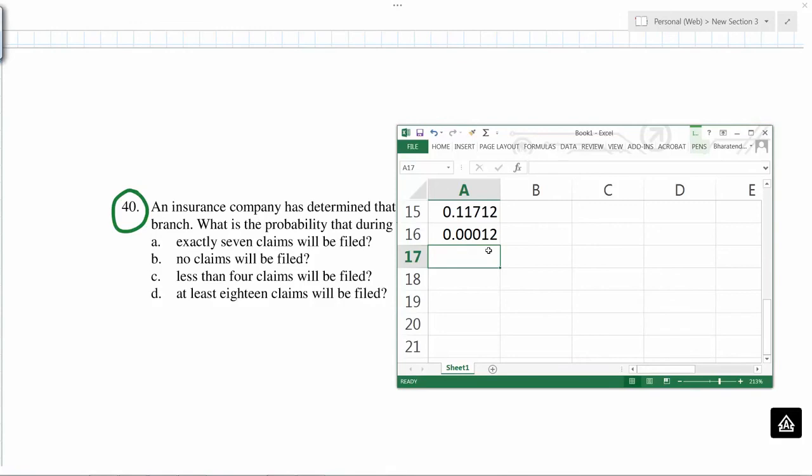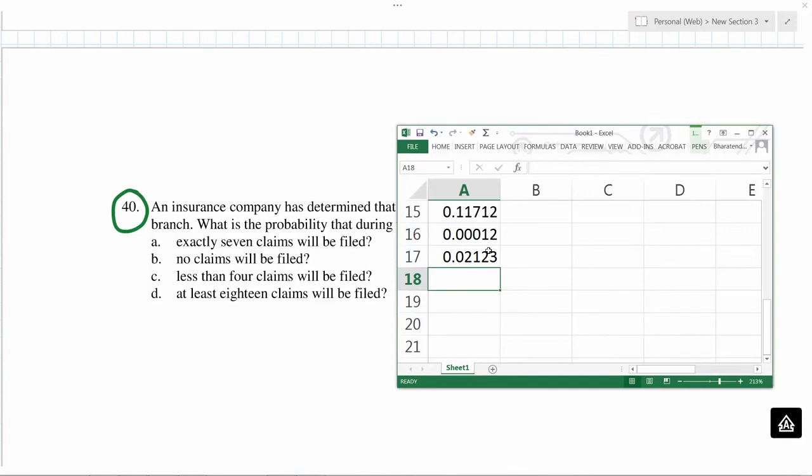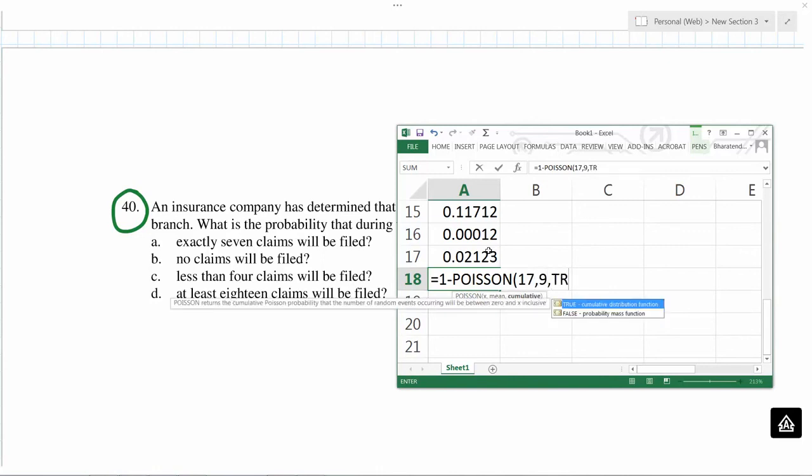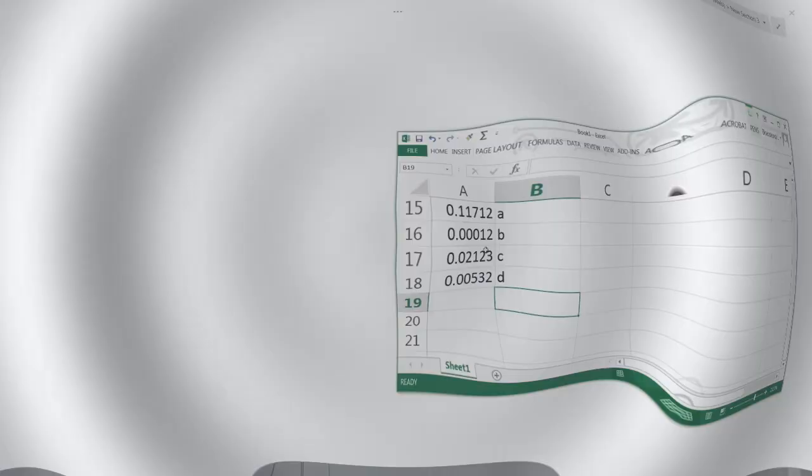Less than 4 means less than or equal to 3. Equals Poisson, 3, average is 9, and because it is less than or equal to, we say true. At least 18 claims, so that means 18 or more. So you have to do 1 minus, and it becomes 17. Equals 1 minus, 17, 9, and true.